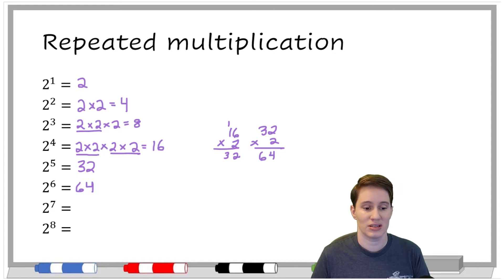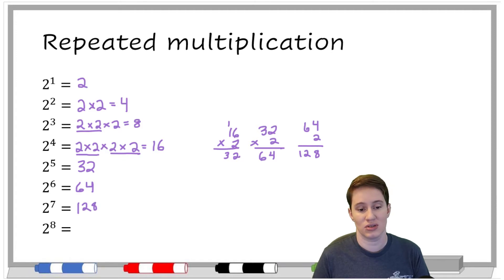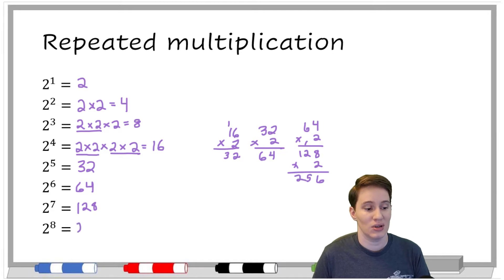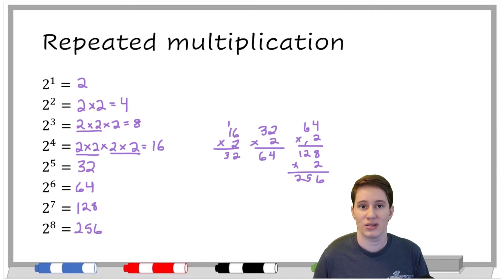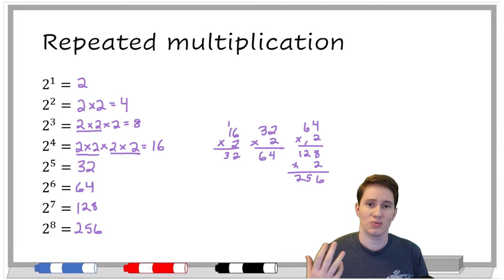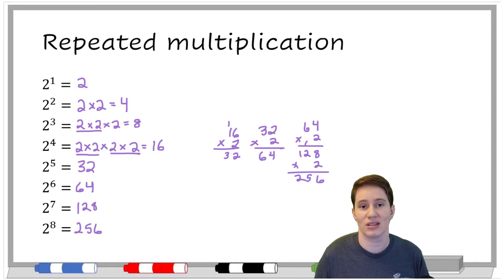Two to the seventh would be 64 times two, so that'd be 128. And then 128 times two. Another cool thing you can do is keep building off of what was before it. You can keep multiplying by powers of twos over and over until you get tired of it or run out of paper. But this is what the idea of an exponent is — it's taking repeated multiplication. Notice on two to the eighth, I didn't write out two eight times. That's the whole point of an exponent: making it so we can write it in a shorter way.